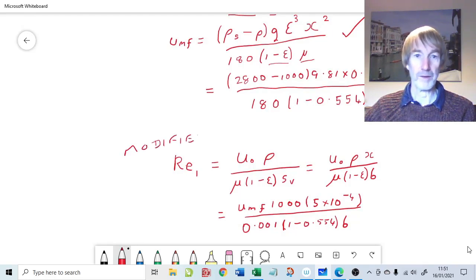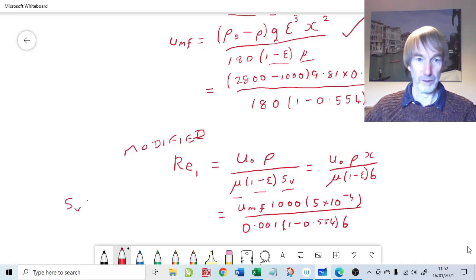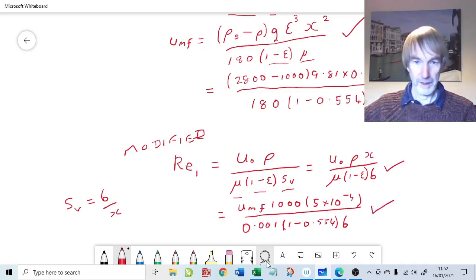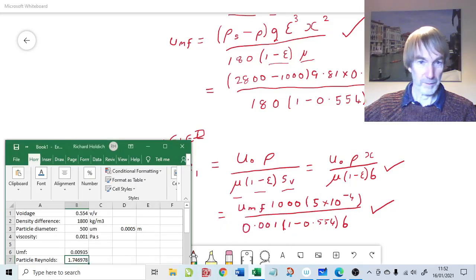This is the modified Reynolds number. Not the flow Reynolds number, the modified Reynolds number, which is the superficial velocity, and the minimum fluidizing velocity is a superficial velocity, so that's not a problem. Times by the density of the fluid, divided by the viscosity of the fluid, one minus the voidage, and then the specific surface area per unit volume. We're going to use the substitution that SV equals six over X, assuming spherical particles. If we do that, we have this equation here, which I've populated with the numbers there. I've pre-programmed that to save time on the spreadsheet.